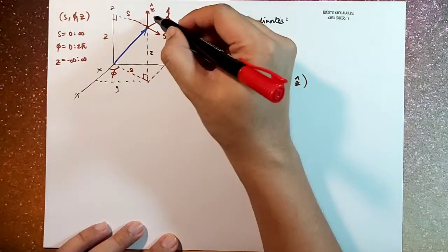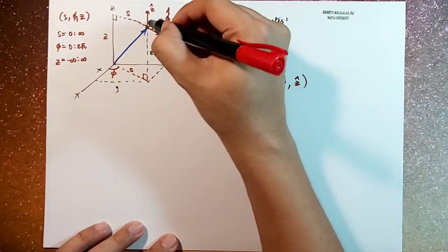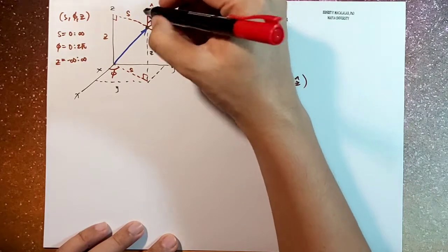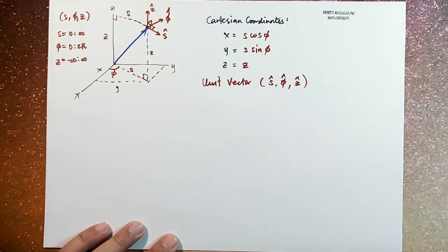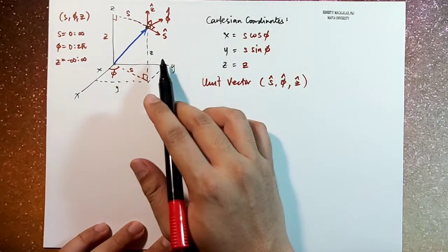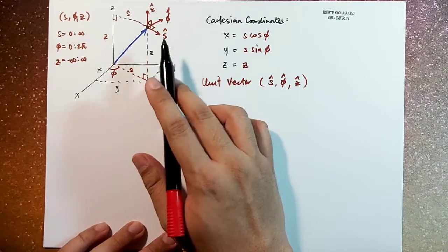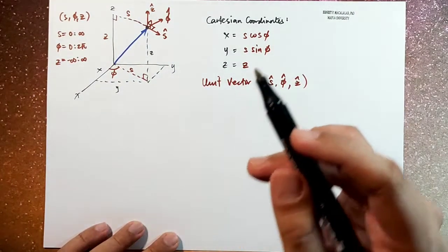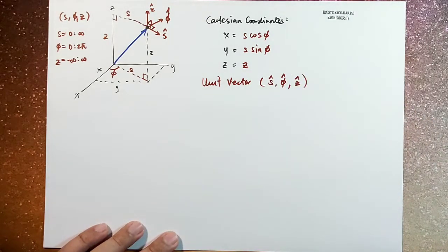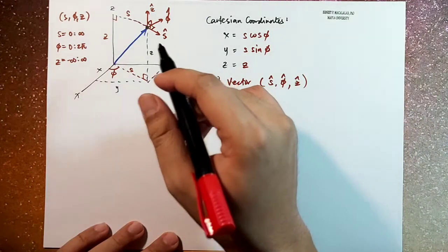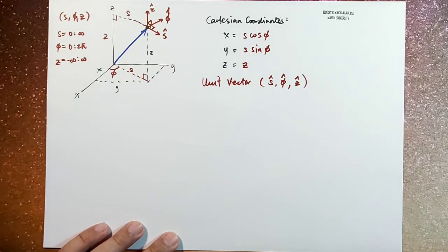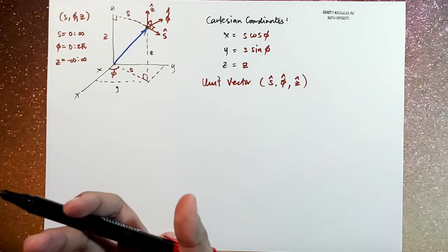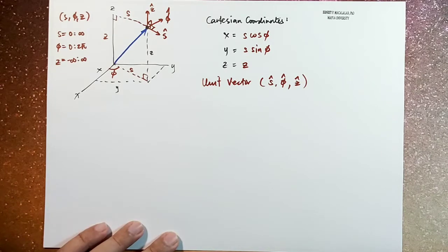Perpendicular to s. Z and s and z are also perpendicular to each other. So just like your x hat, y hat, z hat, and your r hat, theta hat, and phi hat in spherical coordinate system, the s hat, phi hat, and z hat are also mutually perpendicular to each other.